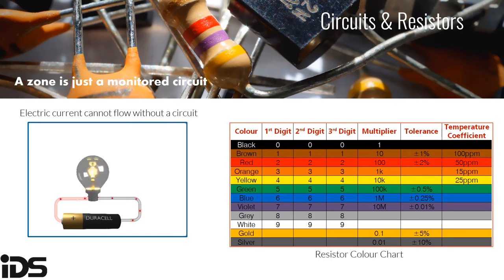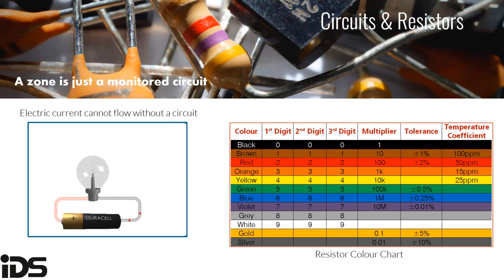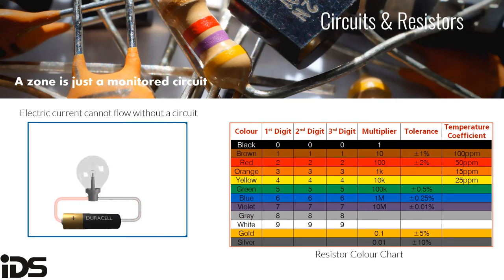A circuit is a closed loop that electrons can travel through. A source of electricity, such as a battery, provides electrical energy — the movement of electrons. Unless the circuit is closed, making a full circle back to the source, no electrons will move. There is usually an appliance, like a light bulb, that uses electricity in the circuit. Resistors are used a lot in alarm systems to reduce voltage going to LEDs, or most commonly to supervised zones.